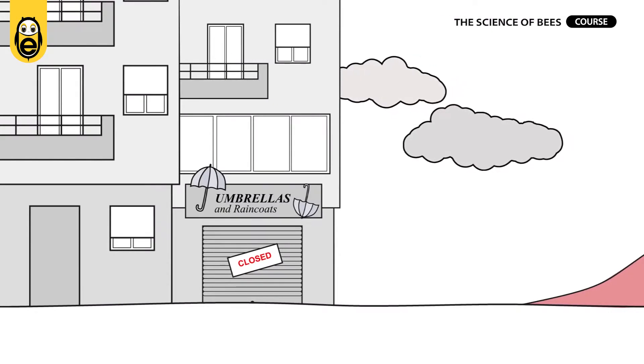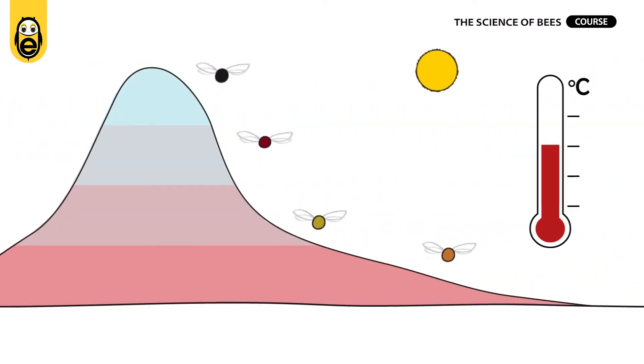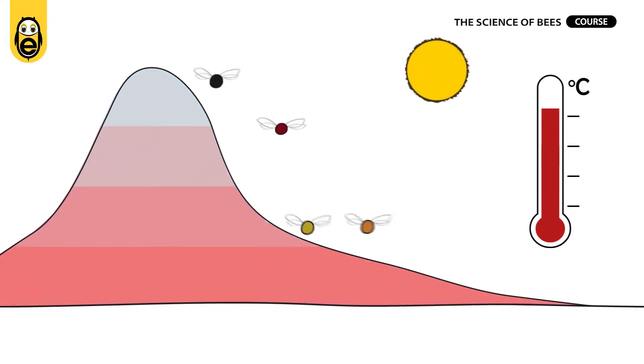Climate change also affects them. For example, when temperatures rise, some species are forced to find cooler places to live. If they don't find them, they simply die.